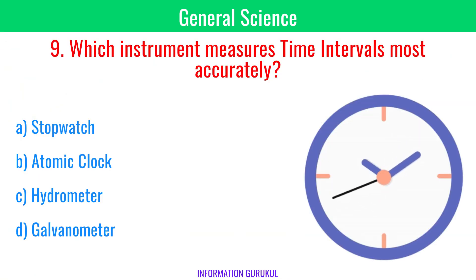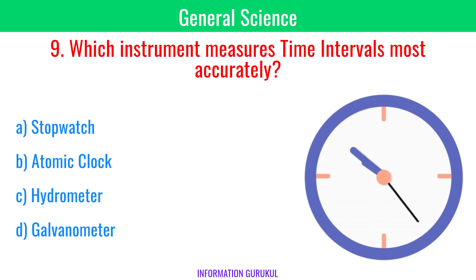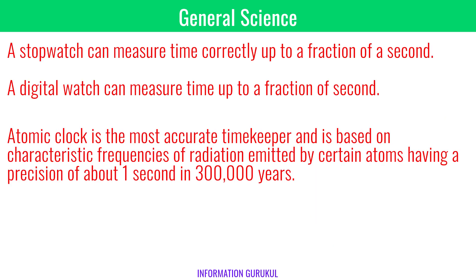Which instrument measures time intervals accurately? Atomic clock. A stopwatch can measure time correctly up to a fraction of a second. A digital watch can measure time up to a fraction of a second, whereas an atomic clock is the most accurate timekeeper and is based on characteristic frequencies of radiation emitted by certain atoms, having a precision of about 1 second in 300,000 years.